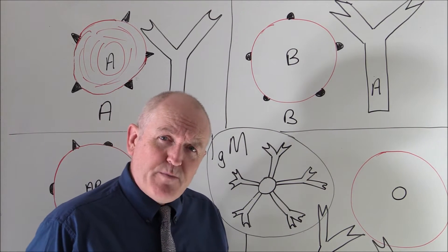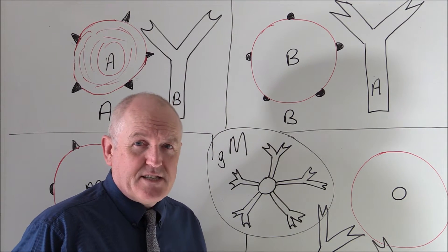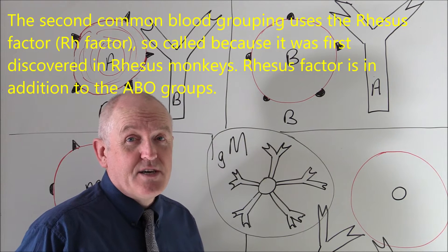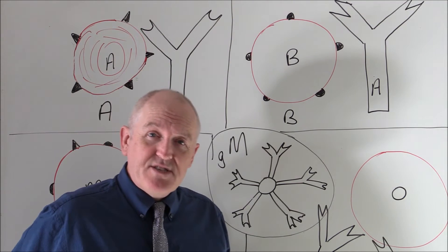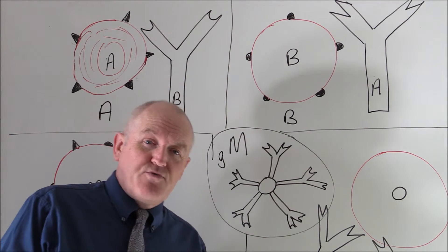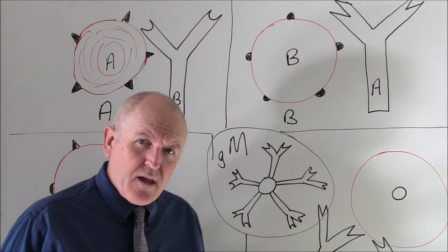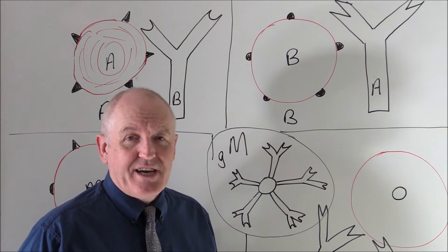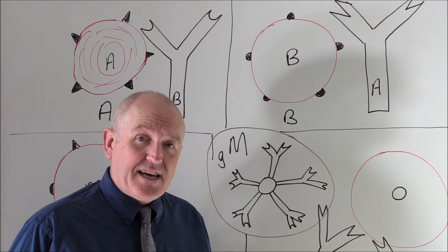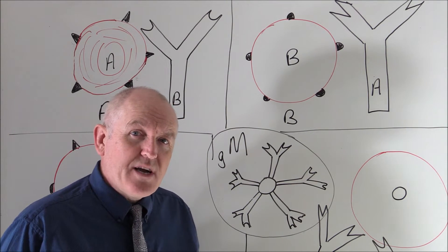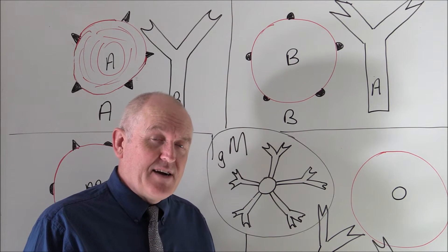Now, the next blood group I want to introduce you to is the rhesus factor. The rhesus factor is so-called because it was discovered using rhesus monkeys. And the rhesus factor is actually a complicated factor with many subgroupings, like C, D and E subgroupings. But the one that is immunologically active, that can act as an antigen, is the D factor. So when we're talking about the rhesus factor, really what we're talking about is the D factor.